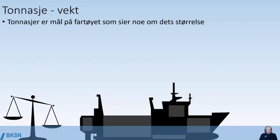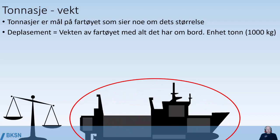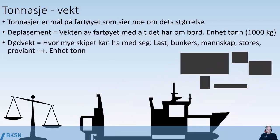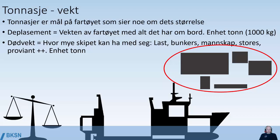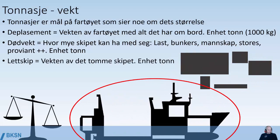Tonnage are measurements of vessels that say something about the size of the ship. Displacement is the weight of the vessel with everything on board — unit is metric tons of a thousand kilos. Dead weight is the amount of weight that the ship can carry: cargo, fuel, crew, stores, provisions, etc. — unit is tons. Light ship is the weight of the empty ship, also in tons.